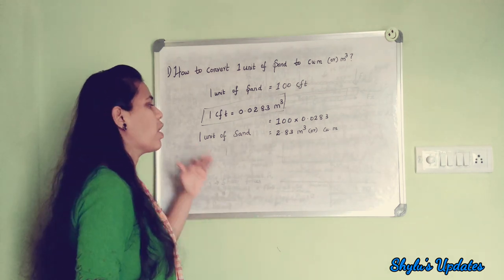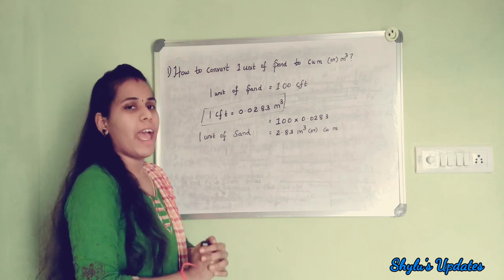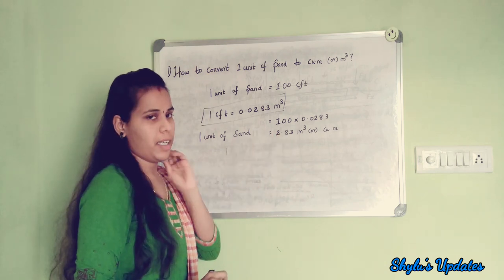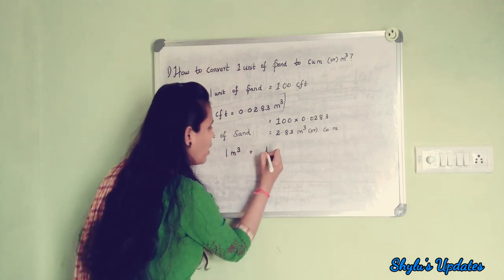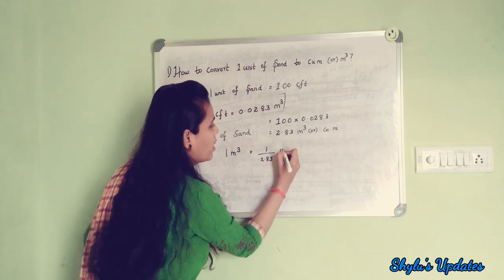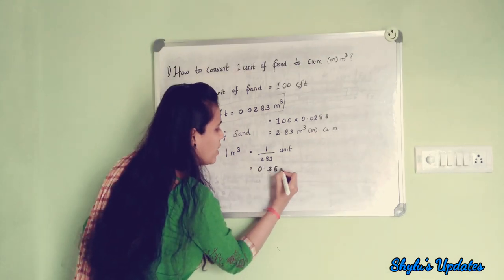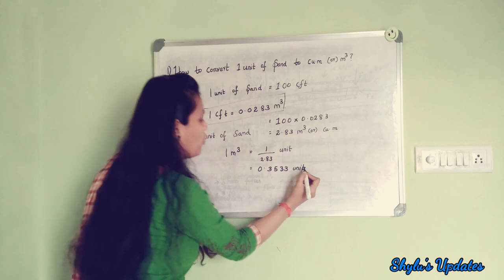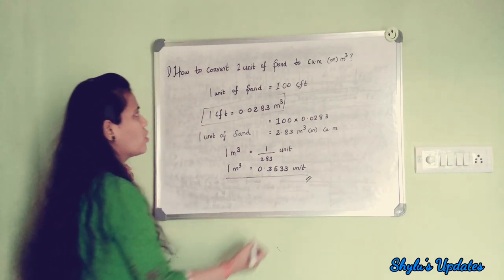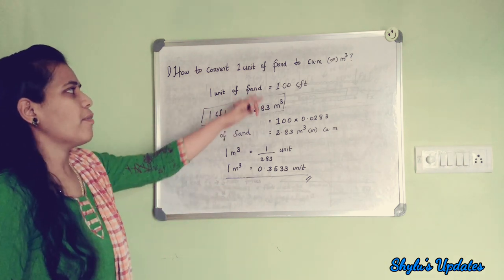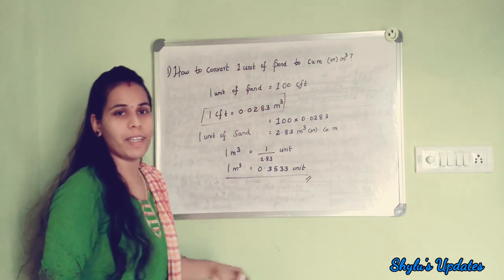We have found that 1 unit of sand equals 2.83 cubic meter. If you want the reverse — how to convert cubic meter to unit — that is also easy. 1 meter cube is equal to 1 divided by 2.83 unit, which equals 0.3533 unit. So for both conversions I have given the answer.